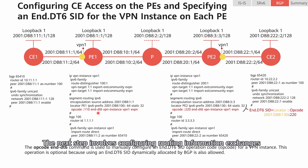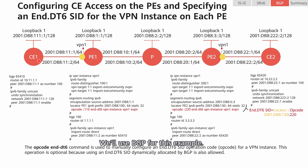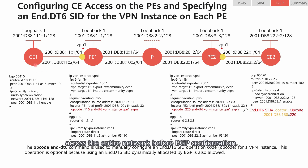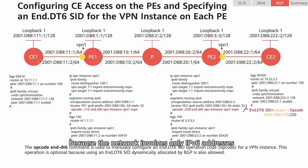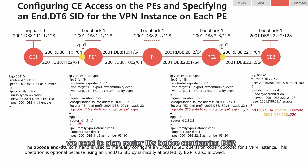The next step involves configuring routing information exchanges between P1 and C1, which can be implemented using multiple routing protocols such as an IGP or static routing. We'll use BGP for this example. Note that router IDs must be planned across the entire network before BGP configuration. Because the network involves only IPv6 addresses instead of IPv4 ones, the router IDs automatically generated by BGP may conflict, leading to a failure of BGP peer relationship establishment. For this reason, we need to plan router IDs before configuring BGP.